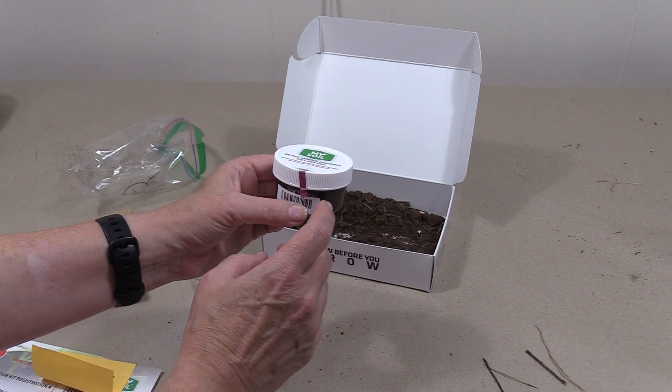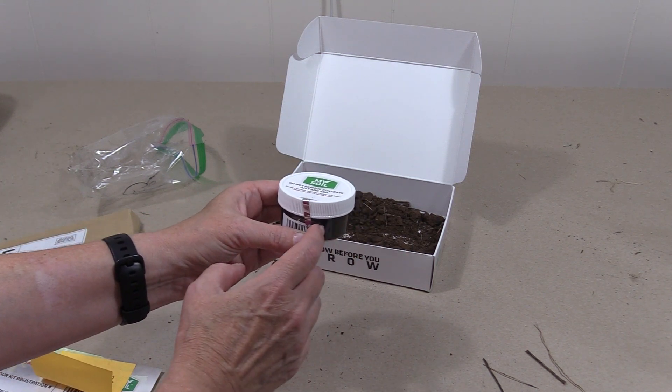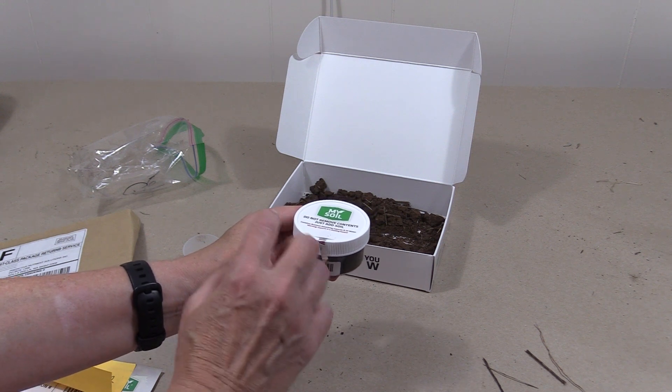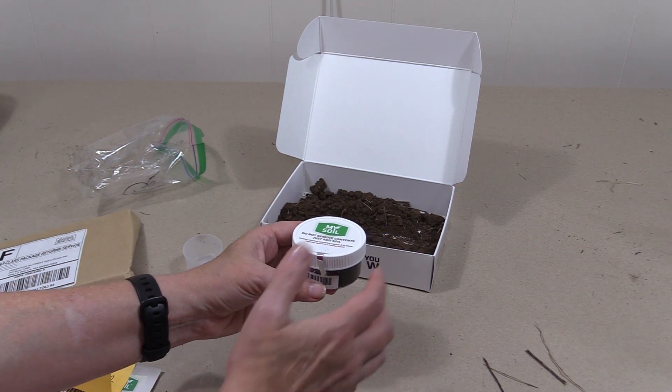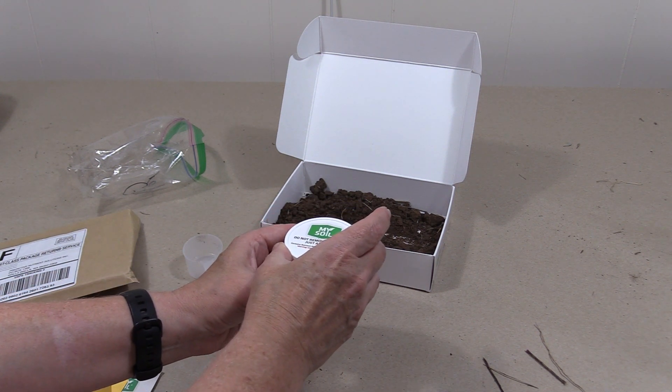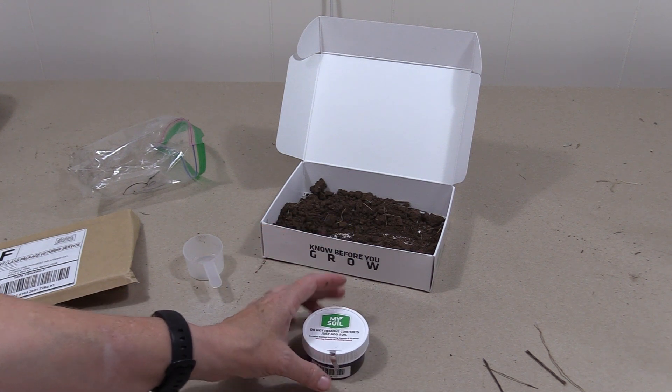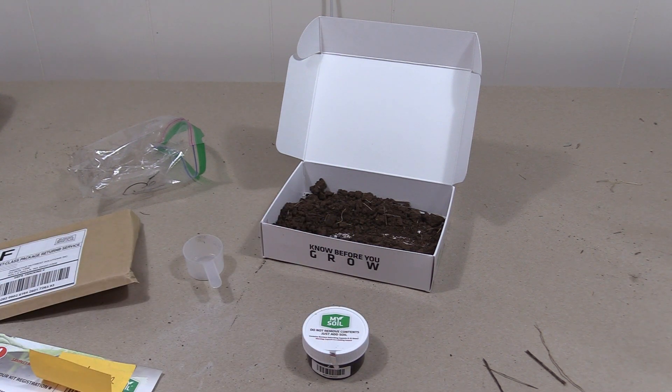So when I registered this kit, I put in the number and I also put in a description. So I put in the description garden area for this sample. That's going to make it easy to keep everything sorted out and make sure I don't get my samples mixed up.